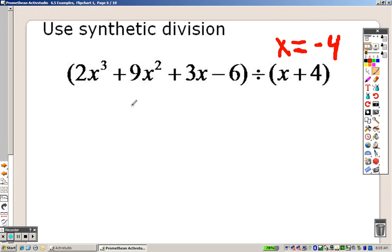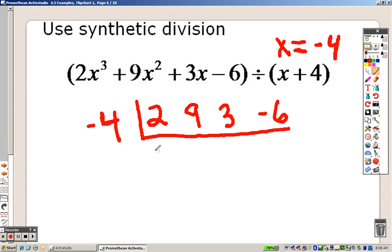So I'm going to go and set this up. It's not missing anything, so I can just put the coefficients the entire way down. It's 2, then it's a 9, then it's a 3, then it's a negative 6. And negative 4 goes on the outside because that's what we solved for.